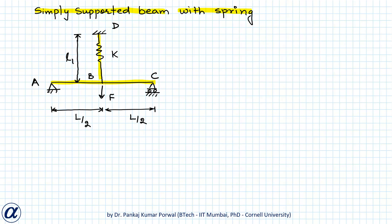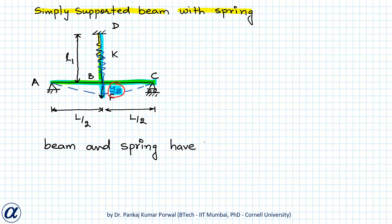Under the action of this force, the system will deform, and let's call the displacement of point B, yb, in the downward direction. The spring will stretch, and note that the displacement of the beam in the downward direction is yb and the stretching of the spring in the downward direction is also equal to yb. So both the beam and the spring have the same displacement.